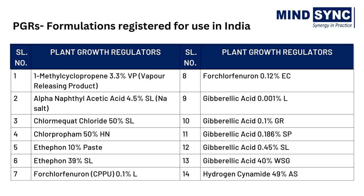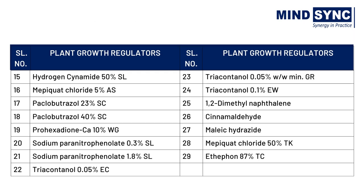MindSync provides a list of some plant growth regulators registered in India under the Insecticides Act 1968, such as: Cloprofam, a plant growth inhibitor used as an anti-sprouting agent for stored potatoes under cold storage conditions; Ethephon, which improves coloration and accelerates uniform ripening of fruits like pineapple, mango, and tomato; and Paclobutrazol, a plant growth regulator that reduces pruning costs, allows higher density planting, and increases root growth.